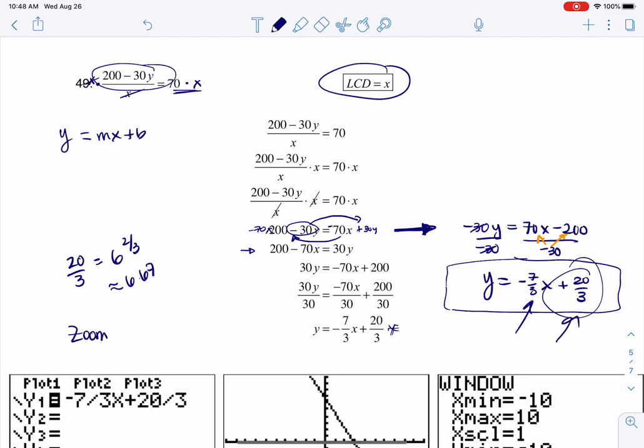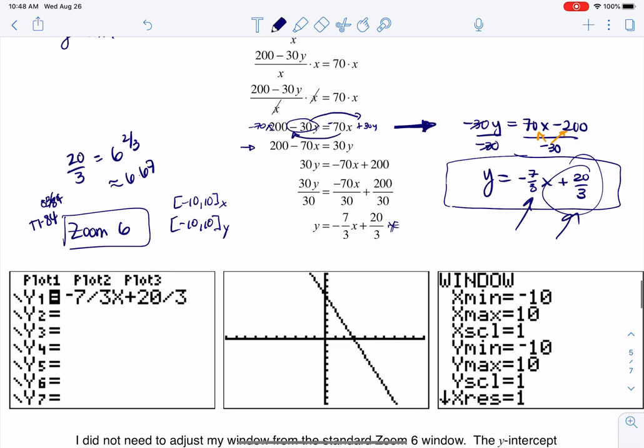If you plug this into your calculator and you use zoom six, now this is if you have the physical calculator, a TI-83 or TI-84, if you hit zoom six it gives you on the x axis values from negative ten to ten and your y values will go from negative ten to ten. So I plug it into my y equals and then I hit zoom six and when you hit zoom six you can see my x min and x max are negative ten to ten, my y min and y max are negative ten to ten.